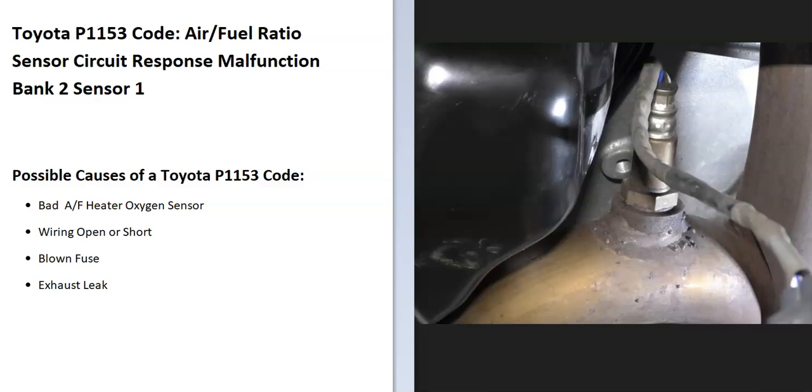Today I'm talking about a Toyota with the P1153 code, what it is and how you go about fixing it. A Toyota P1153 code is an air-fuel ratio sensor circuit response malfunction, bank 2 sensor 1.